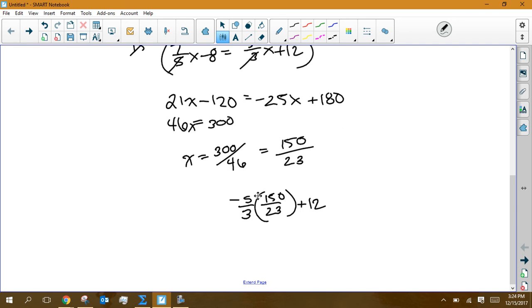So when you go through in doing that, 150 times 5. So 150 times 5 is, should be 750. So I get negative 750. 3 times 23 is 69. So now this would be 12 times 69 and 69 on the bottom.